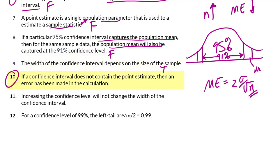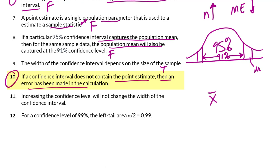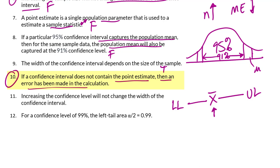Number 10: If a confidence interval does not contain the point estimate, then an error has been made in the calculation. Since we are talking about the population mean, the confidence interval will have to contain X-bar. To calculate the confidence interval, we take X-bar and add and subtract the margin of error from it. So X-bar, which is the sample mean and our point estimate, will be in the middle, with the lower limit on the left and upper limit on the right. If it does not contain the sample mean, there is definitely an error in the calculation. So that is a true statement.